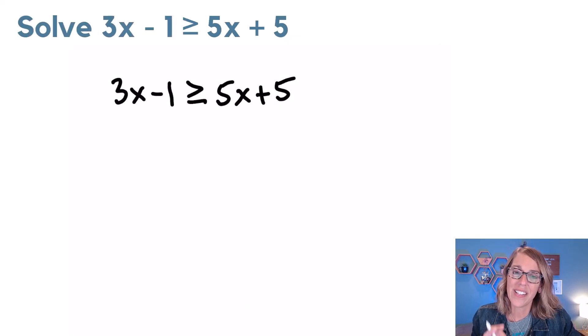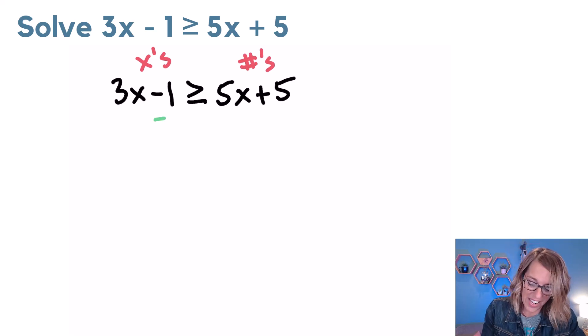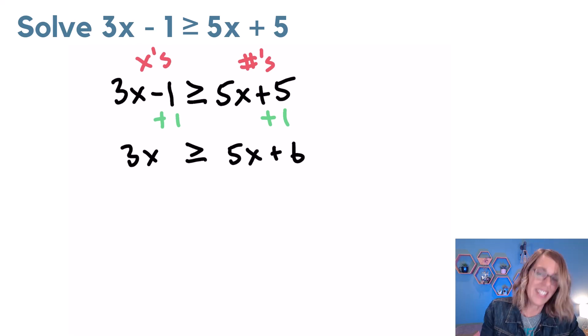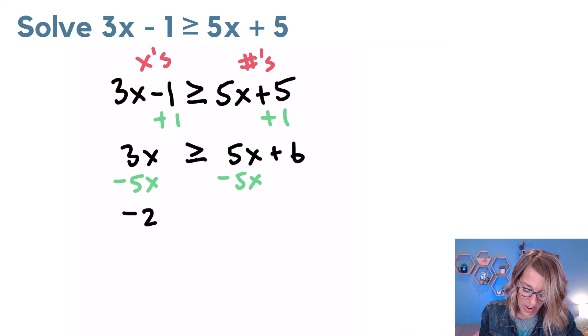Now in this example, we are going to see that special rule for inequalities, but it's not going to show up until we multiply or divide. I do want to start by adding and subtracting to get x's on one side and numbers on the other. So that means that that 3x can stay, but I'm going to add the 1 to both sides. And I get 3x greater than or equal to 5x, 5 plus 1 is 6. Next, I need to move the 5x over to the x side. So I'm going to subtract it since it's positive and I end up with negative 2x is greater than or equal to a 6.